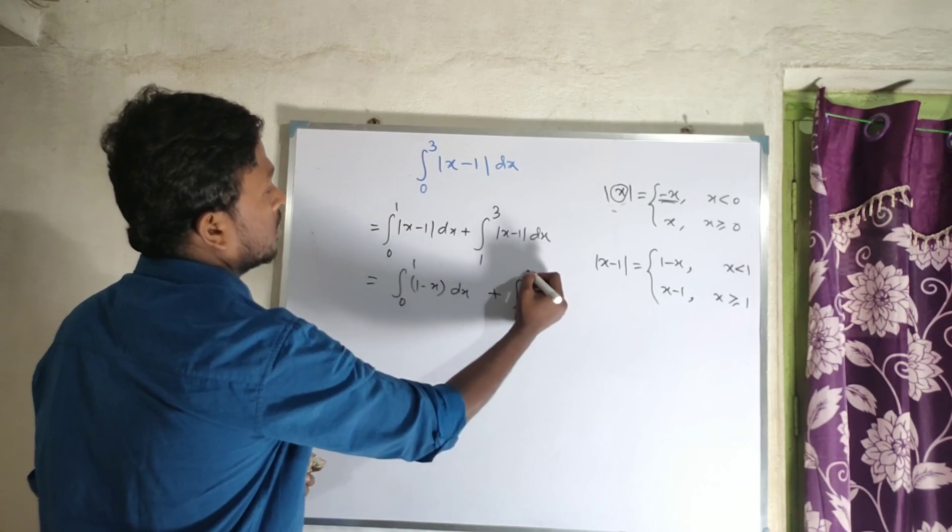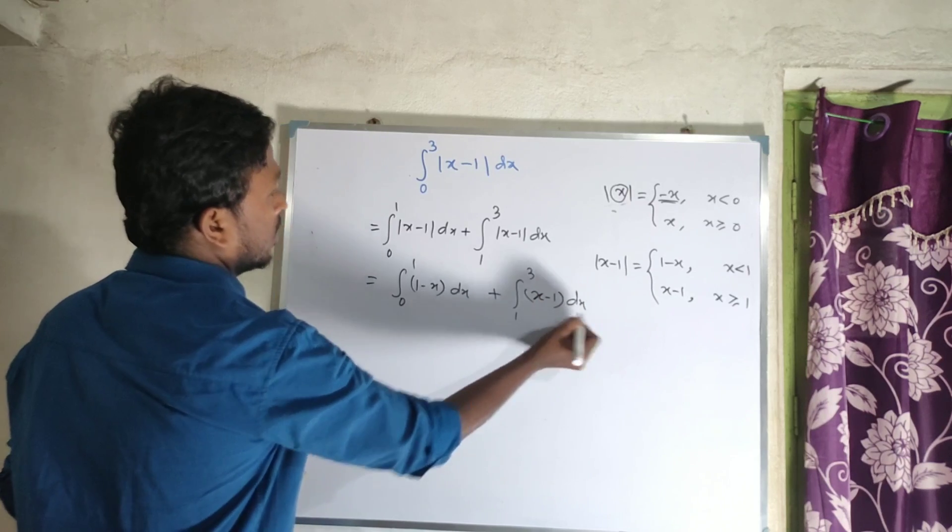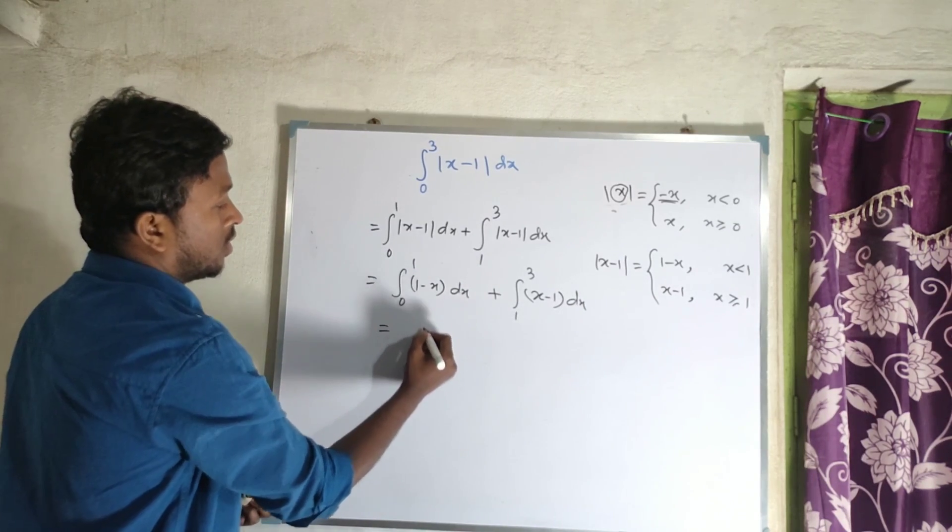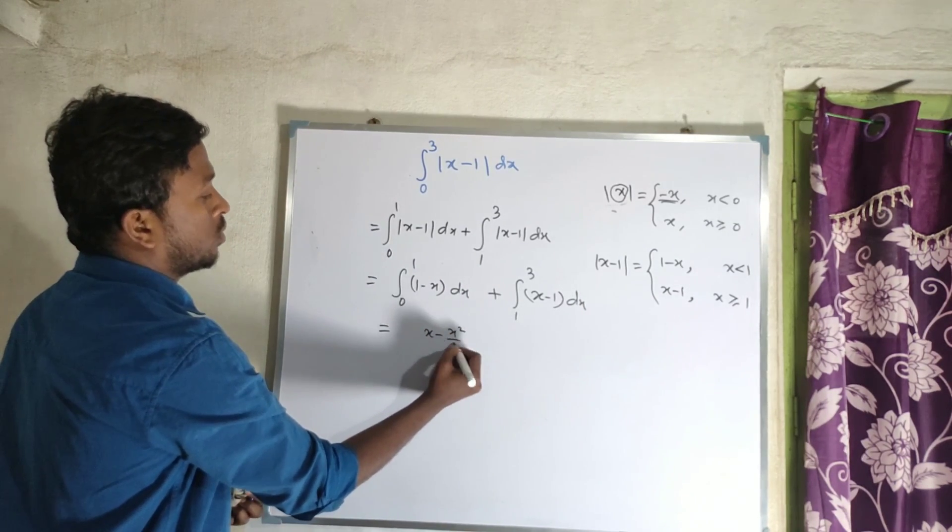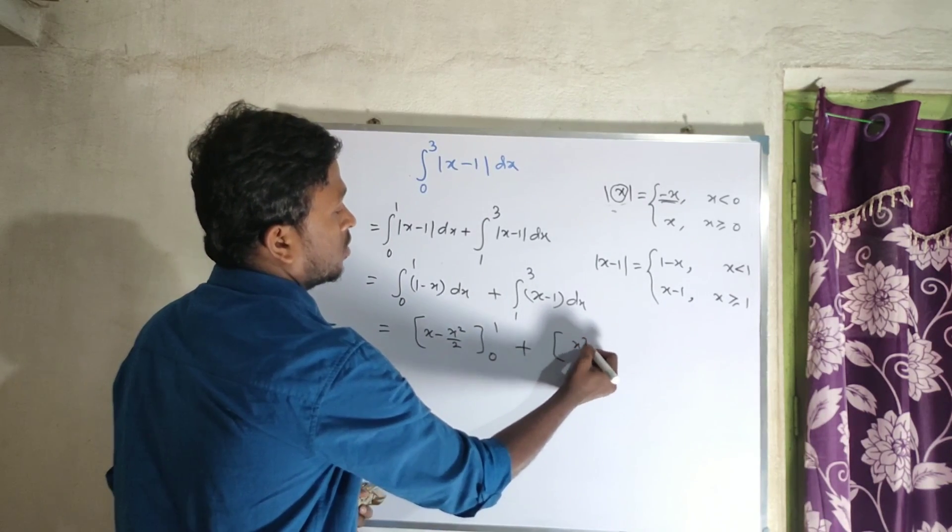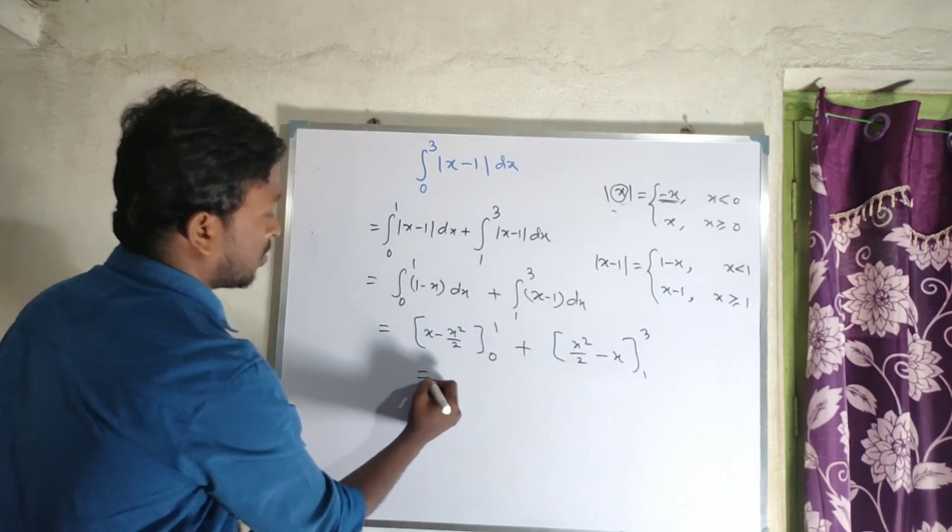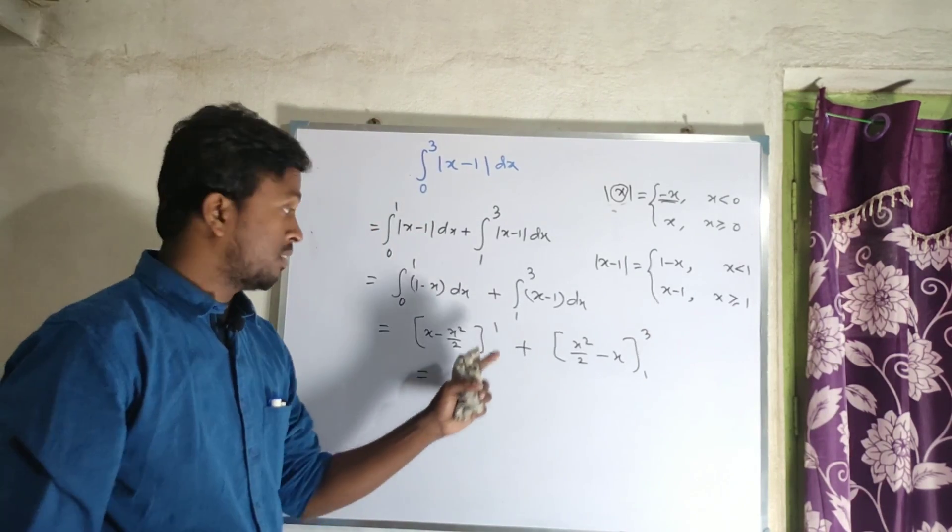So this becomes integration from 0 to 1 of one minus x dx plus integration from 1 to 3 of x minus 1 dx. Now integrating these, we get x minus x squared by 2 with limit 0 to 1, plus x squared by 2 minus x with limit 1 to 3.